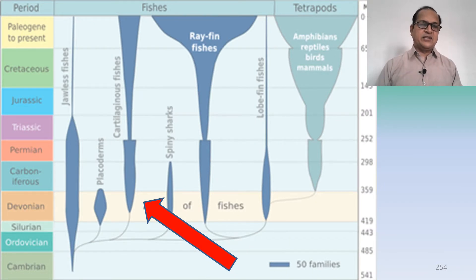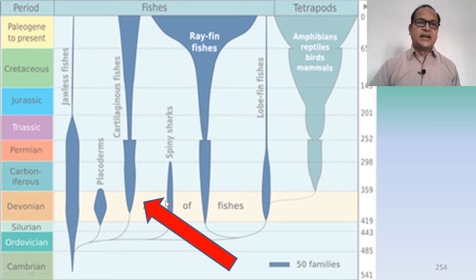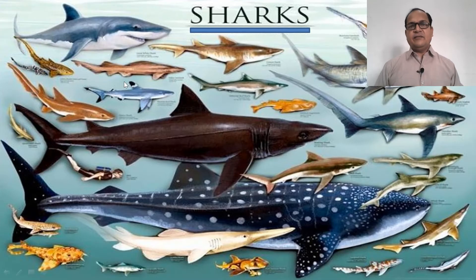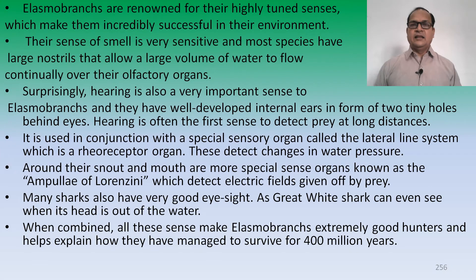Looking at the geological timescale, it is presumed that cartilaginous species originated during the Devonian period. The Devonian period is also known as the age of fish — the period from which fishes are thought to have originated. There are various types of sharks with different tail shapes, scales, colors, sizes, and forms found in the ocean.